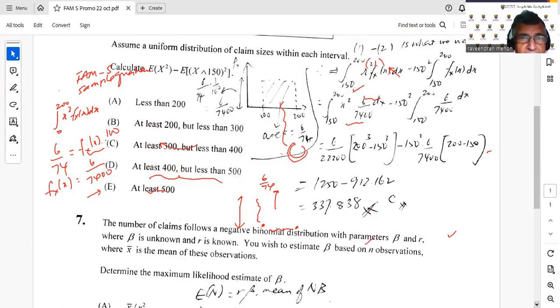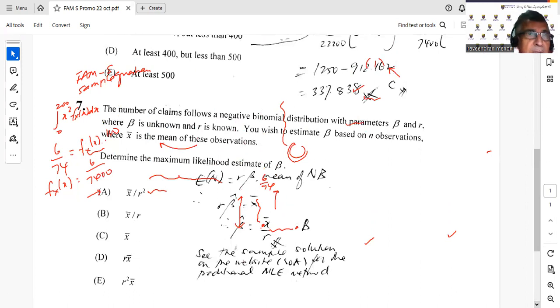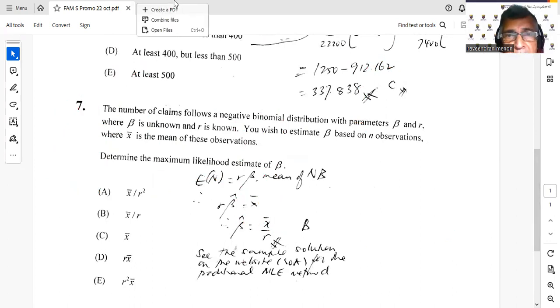Go through it. And very quickly, number 7. Number 7 is a very simple question. Question number 7: The number of claims follows a negative binomial distribution with parameters beta and R, where beta is unknown and R is known. You wish to estimate beta based on N observations, where x bar is the mean of these observations. So determine the MLE of beta. What you can do is you can use the normal method that we use in MLE. That means set up the likelihood and log-likelihood, take the derivative, set to 0. I think that's what they have done in the solution that is provided on the SOA website. You can look it up. The solution that is provided on the SOA website.